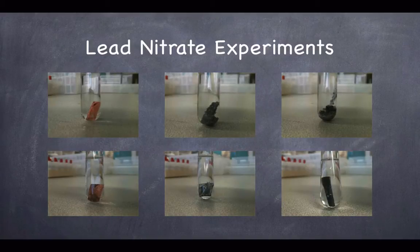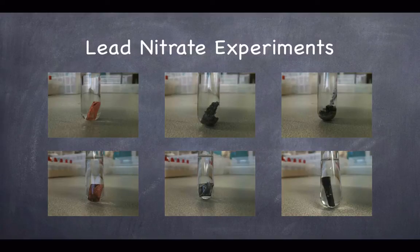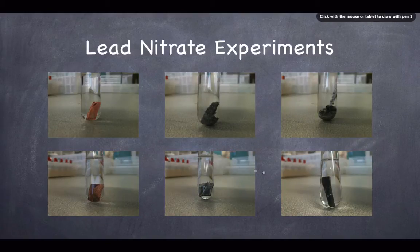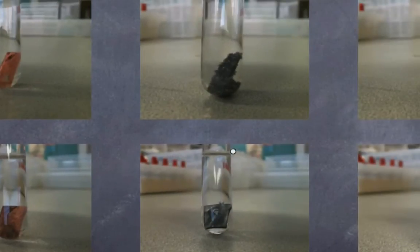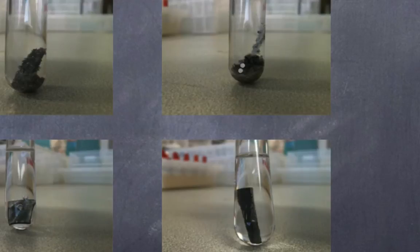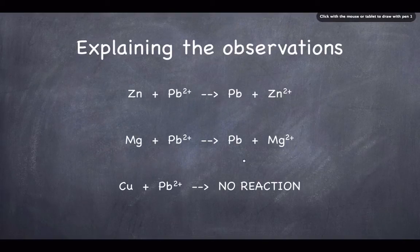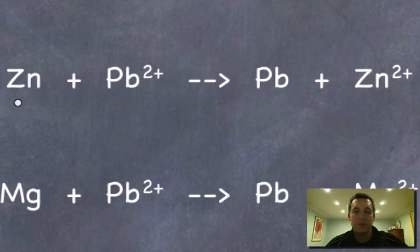Now let's look at some more interesting experiments — the lead nitrate experiments. Each tube has lead nitrate in it, and we've got three metals: copper on the left, zinc in the middle, and magnesium on the right. Copper hasn't changed much, so copper atoms weren't able to give their electrons to the lead ions. Zinc certainly has reacted — there seems to be a new metal formed on the surface — and the same is true for magnesium.